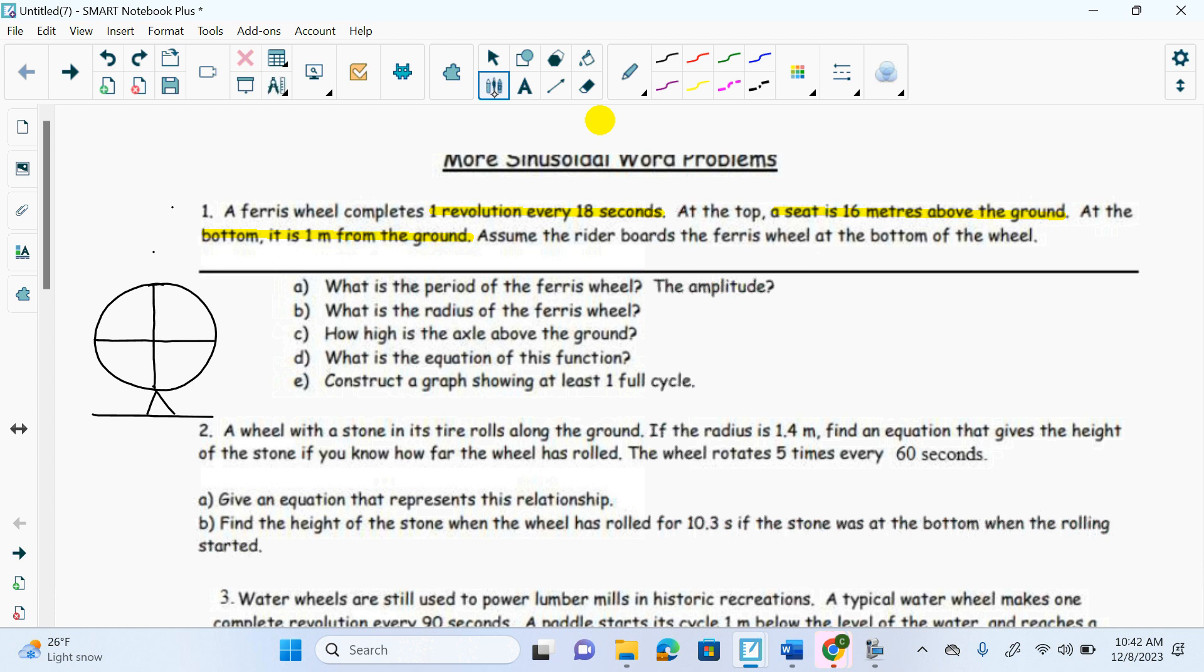So one full revolution is the same as what, do you think? Words we've used before. Amplitude, midline, period. Period. Period is how long it takes to repeat itself, correct? So one revolution is a fancy way of giving you the period.